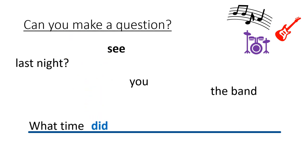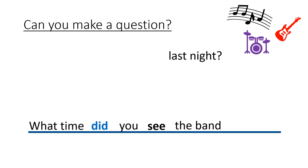She, or they, or I? No, you. What time did you, and the verb? See. See what? The band. Last night. What time did you see the band last night?